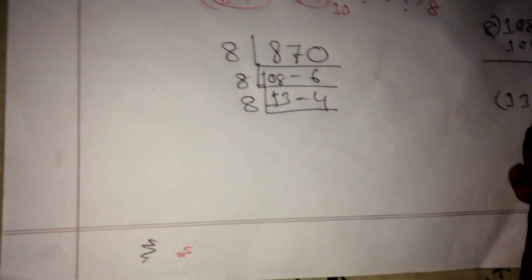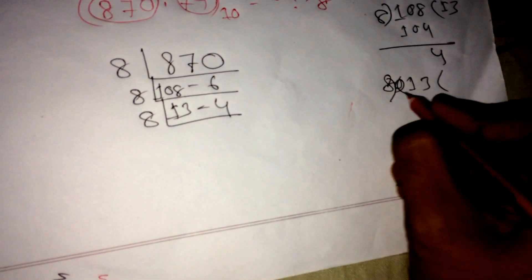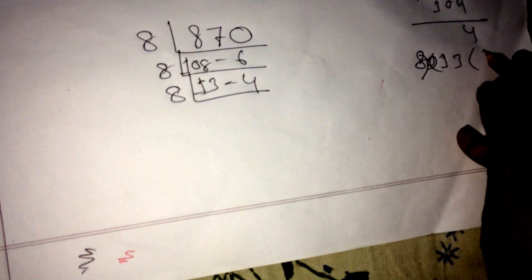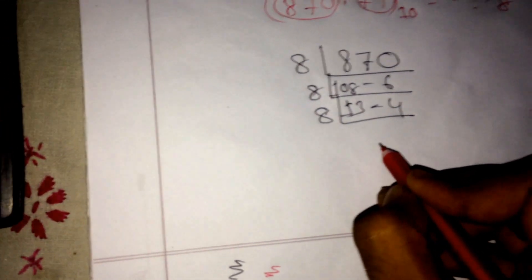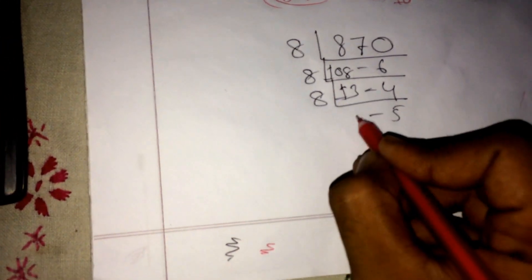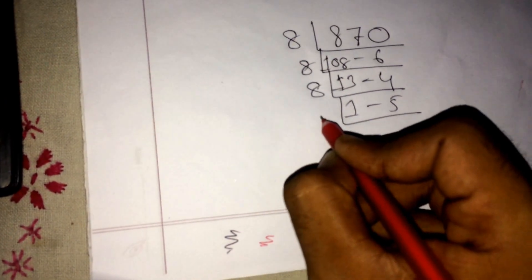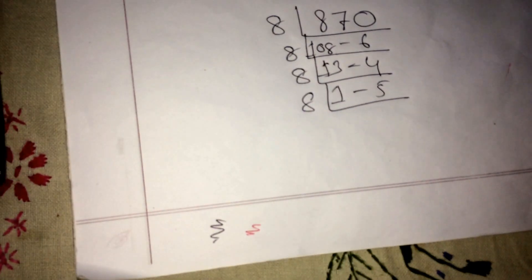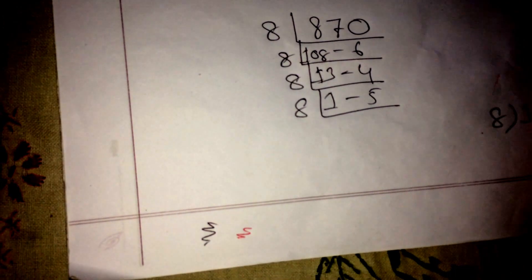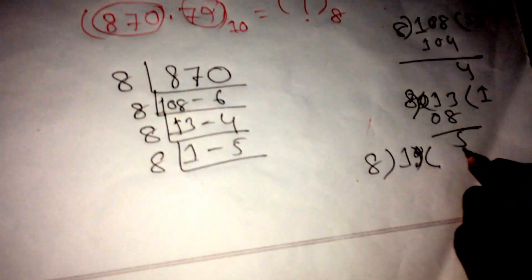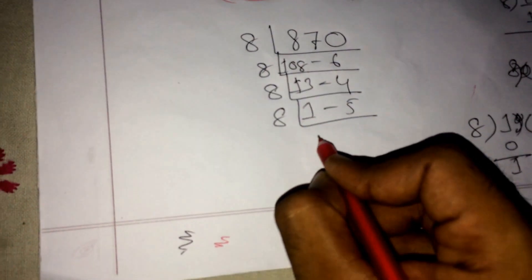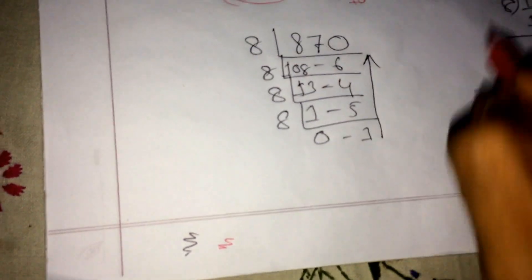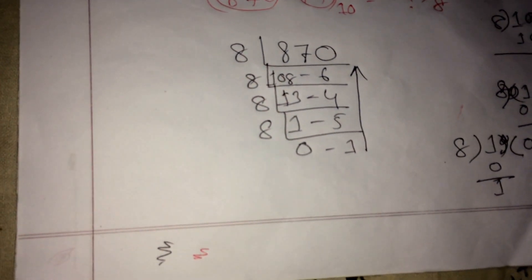13 times 8 is 104, so from 108 we get remainder 4. Then 13 divided by 8: 8 times 1 is 8, remainder 5. Then dividing 1 by 8 is impossible, so we put a zero — we get quotient 0 and remainder 1.